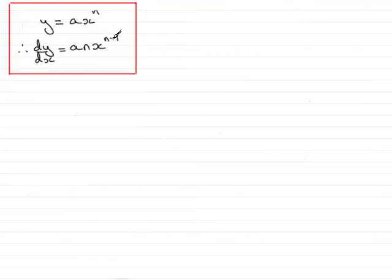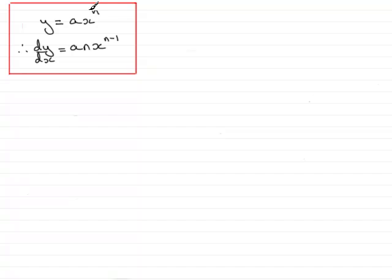Welcome to this tutorial on differentiating terms of the form Ax to the power n, where a and n are constants. It can be shown that dy/dx for terms like this turns out to be An times x to the power n minus 1. In other words, you simply multiply the power by the number in front of x and then subtract 1 from the power.